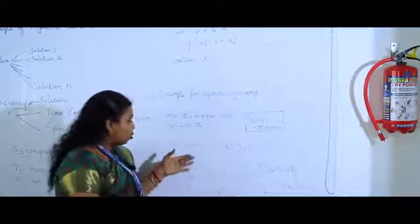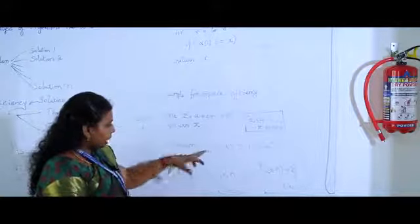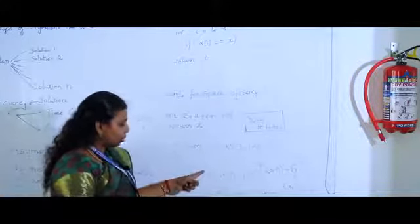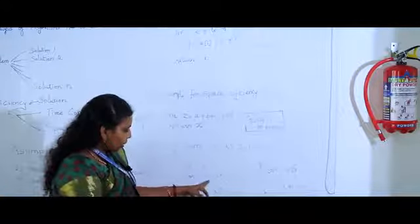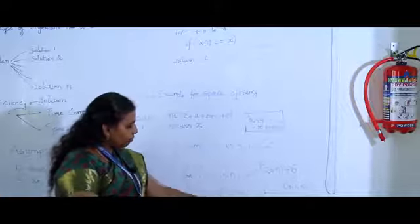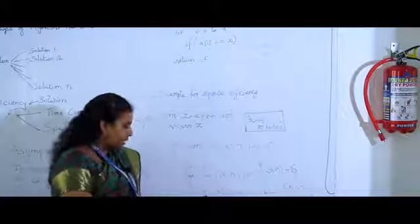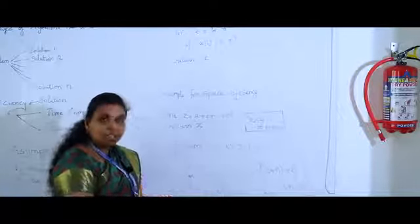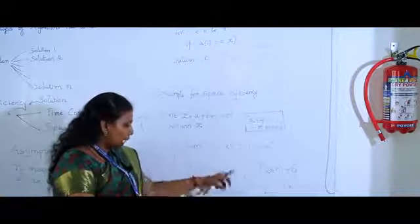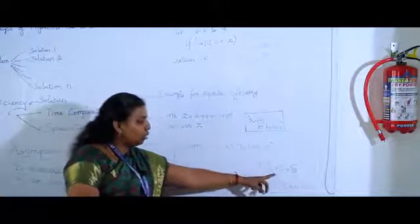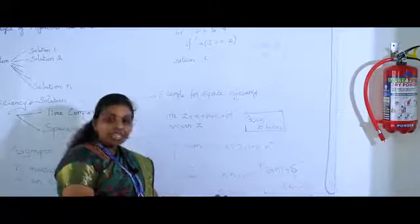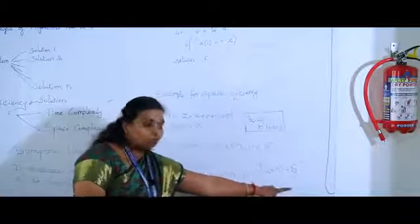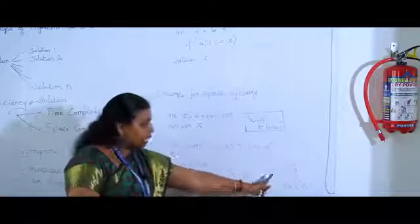The second set of code is addition of n numbers using an array. I have a function sum which takes the array and the size n as inputs. I initialize x to 0, then a for loop adds each array element to x, and finally I return x. The memory consumed is 2 into n bytes for the array elements (each integer is 2 bytes), plus 6 bytes for variables x, i, and n — giving 2n plus 6 bytes total.